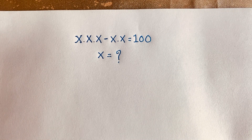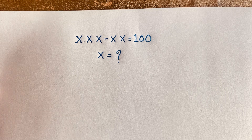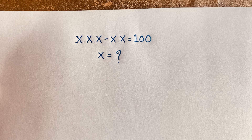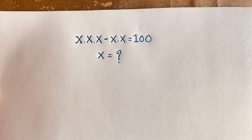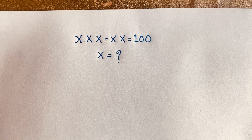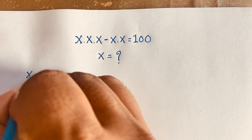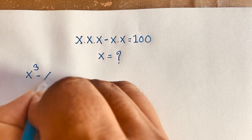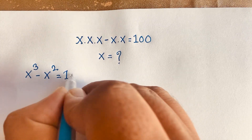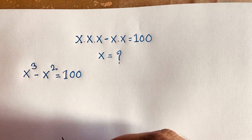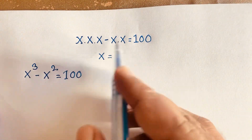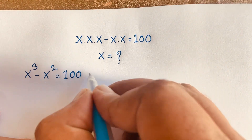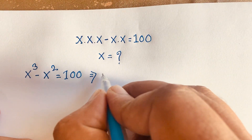Hello everyone. In this video we solve an interesting Math Olympiad question. It is a cubic equation: x times x times x minus x times x is equal to 100. So this equation is x to the power 3 minus x to the power 2 equals 100, because x times x is x squared and the first term is x to the power 3.